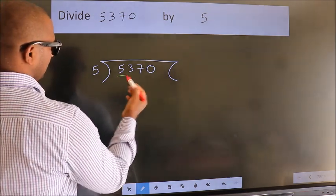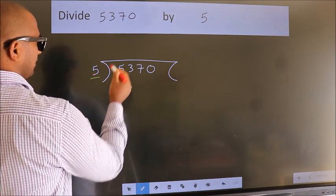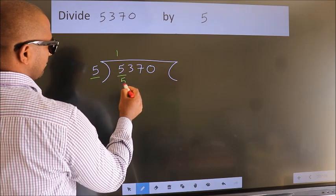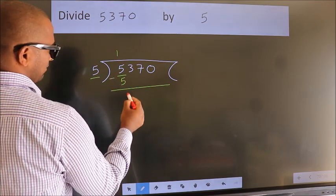Here we have 5, here 5. When do we get 5? In the 5 table. 5 once is 5. Now we should subtract. We get 0.